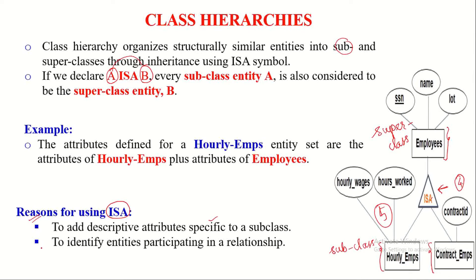The other reason for using the ISA symbol is to identify entities participating in a relationship. Since we used the ISA symbol in this example, we could identify the employee entity set as a superclass and hourly employees and contract employees as subclass entity sets, establishing their relationship.